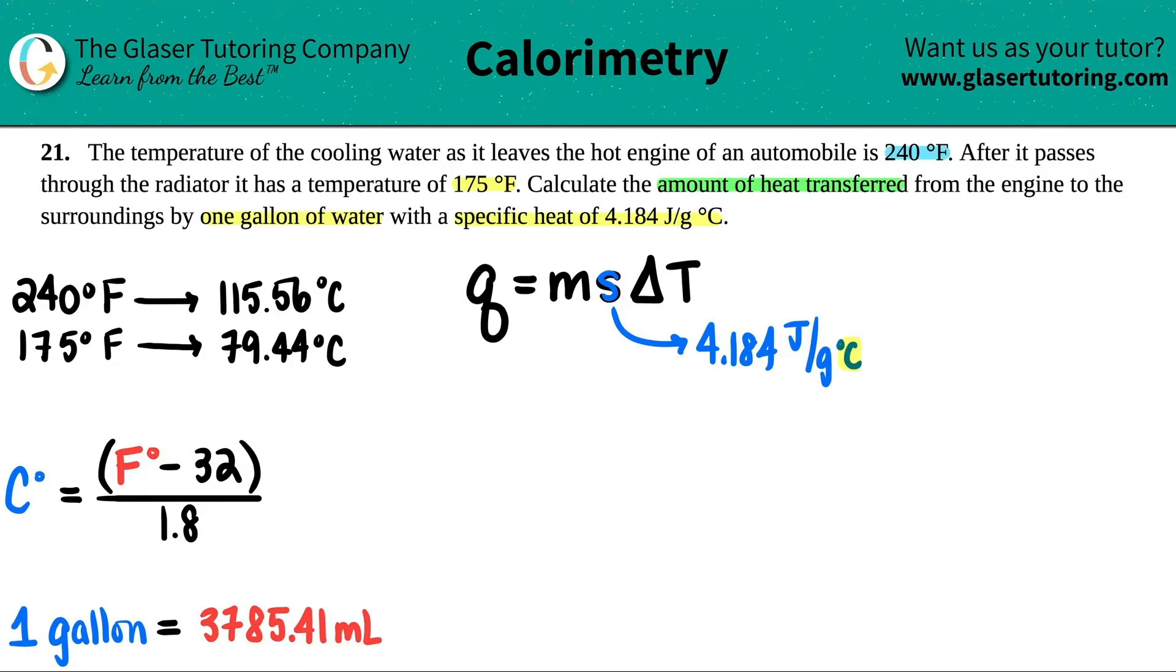Now it says the temperature of the cooling water as it leaves was the 240. After it passes through the radiator, it dropped down. So this temperature, 175, was after the 240. So it makes sense that the 175 was the final temp, TF. And the 240 was the initial temp, TI.